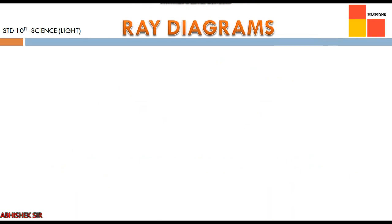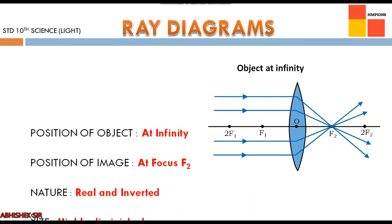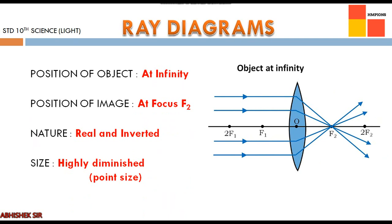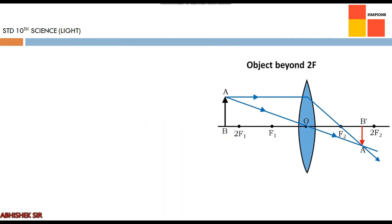We will see image formation by convex lens and two cases of concave lens. In ray diagrams, focus on four things: position of object, position of image, nature of image, and size. First case — object at infinity: image is formed at f2, nature is real and inverted, and the size is highly diminished.